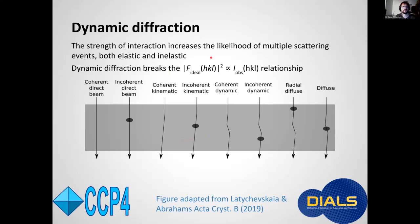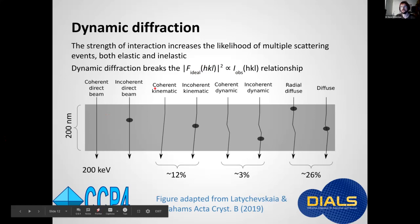So electrons are rather likely to scatter more than once as they pass through the sample. This is a nice figure that's come from work done in Jan-Peter Abraham's lab at the PSI which illustrates the possible fate of an electron passing through a 200 nanometer thick crystal.